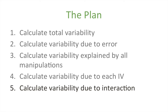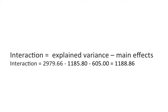Now that we know the variability due to all our manipulations and specifically due to the individual main effects, whatever is left must be due to the interaction. To calculate the interaction sum of squares, we take the total explained variance and subtract the variance explained by the main effects. Doing that gives us 1188.86 units of variability for the interaction.